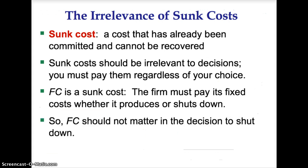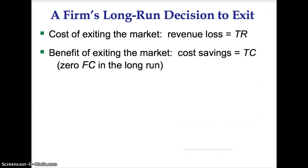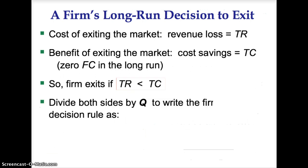When deciding to exit the market, the firm must also weigh costs and benefits. The cost of exiting is the loss of revenue, or total revenue, TR. The benefit of exiting is the savings on costs, or total costs, TC, since there are no fixed costs in the long run. The firm exits if total revenue is less than total cost. Dividing both sides by quantity, the firm's decision rule is to exit the market if price is less than average total cost.